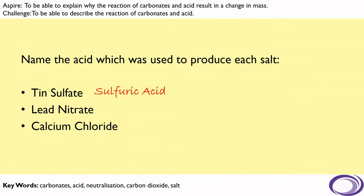Okay, so you should have had that sulfuric acid would be used to produce tin sulfate. Nitric acid would be used to produce lead nitrate and hydrochloric acid would be used to produce calcium chloride.